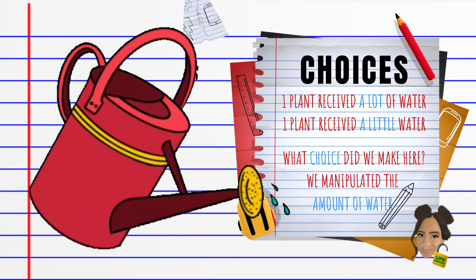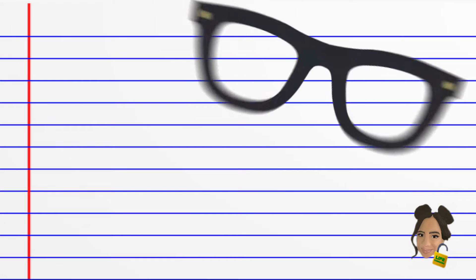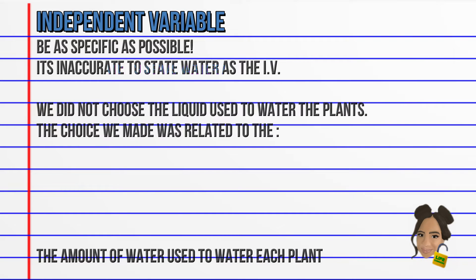Be sure to be as specific as possible because it's inaccurate to state the independent variable as water, because the choice we made was not the liquid but rather the amount.